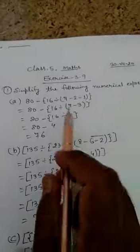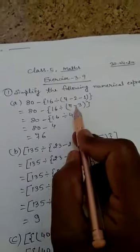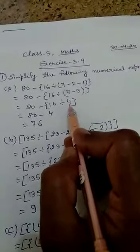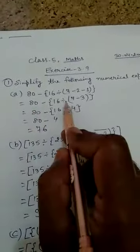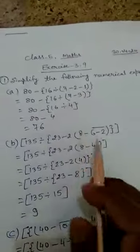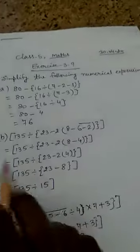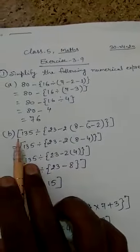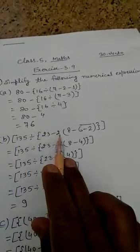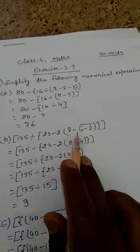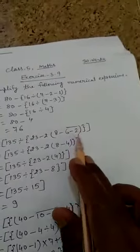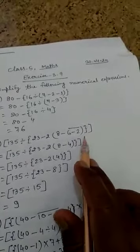You have seen that for the operation we solve, we make that change in the further steps, but all other numbers we write as they are written in the question. Now question number B: big brackets, 135 divided by curly braces, 23 minus 2, small brackets, 8 minus 6, minus 2, vinculum, small bracket close, curly braces close, and big bracket close.